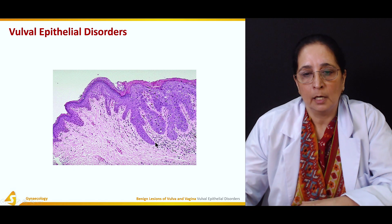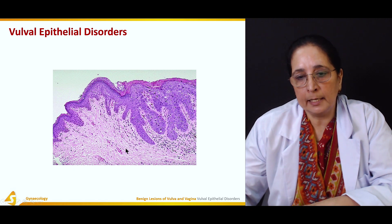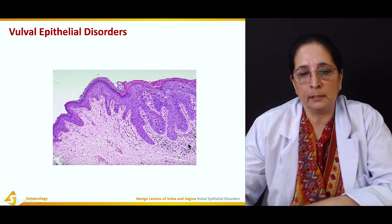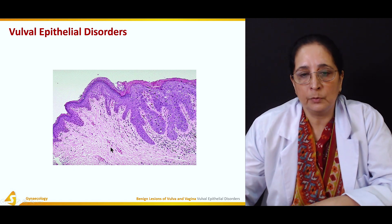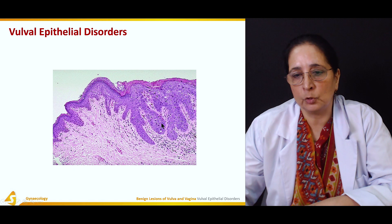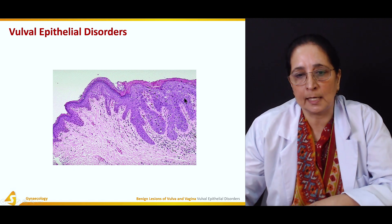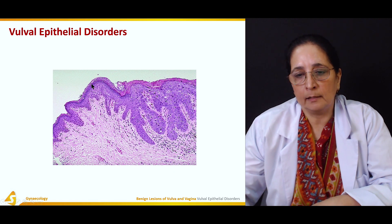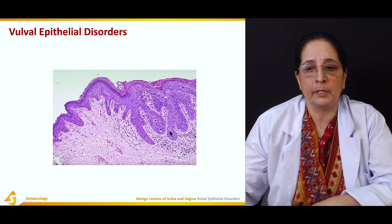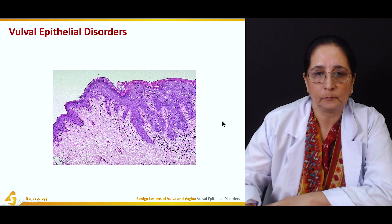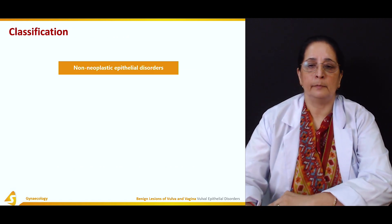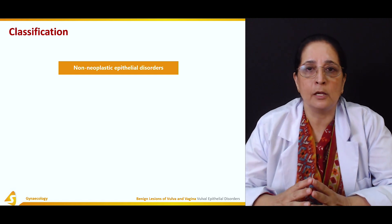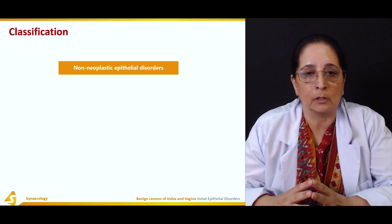Whenever there is a disorder, the lining of the cell layers is affected. The actual stratification of the cells is lost, polarity is lost, and cellular atypia is present. The classification depends on neoplastic and non-neoplastic disorders.